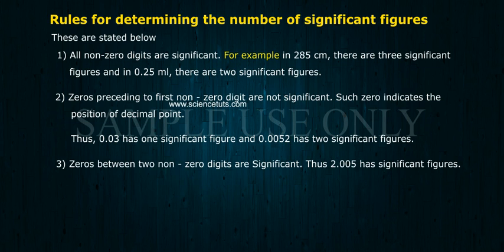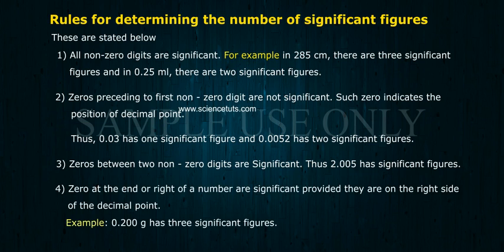Rule 3: Zeros between two non-zero digits are significant. Thus, 2.005 has four significant figures.